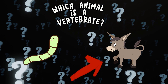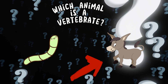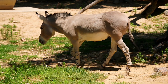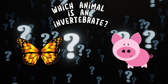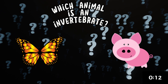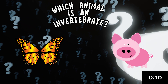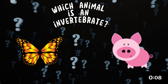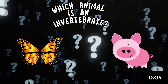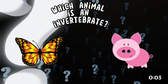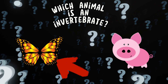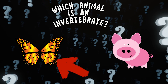Which animal is a vertebrate? The correct answer — a donkey is a vertebrate animal. Which animal is an invertebrate? A butterfly is an invertebrate animal.